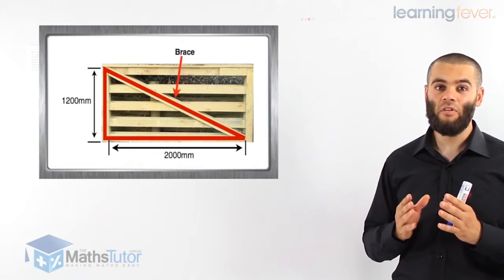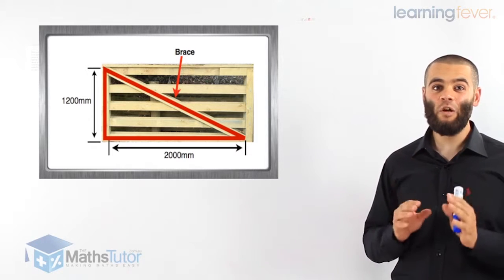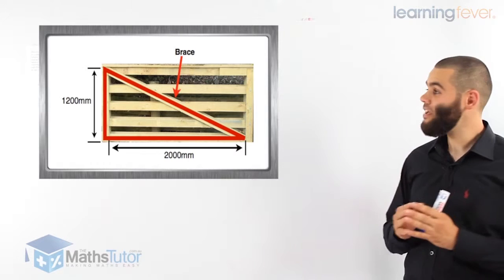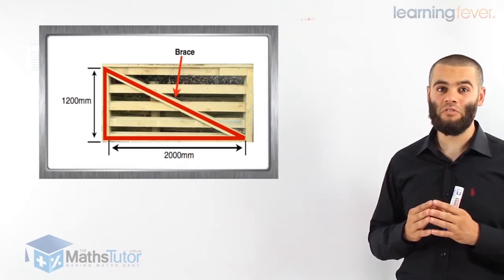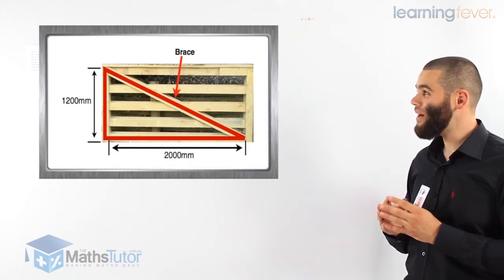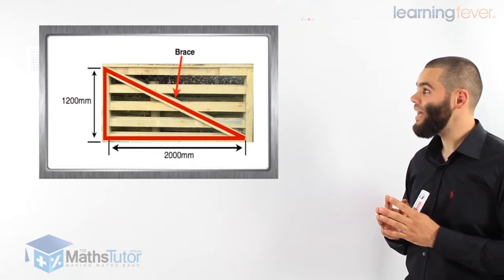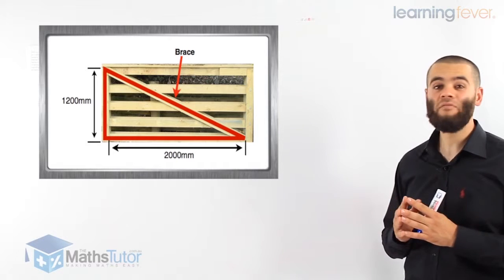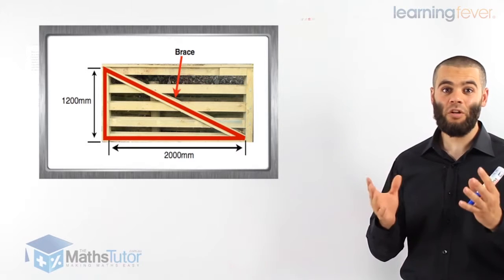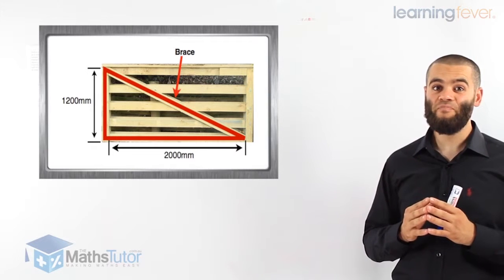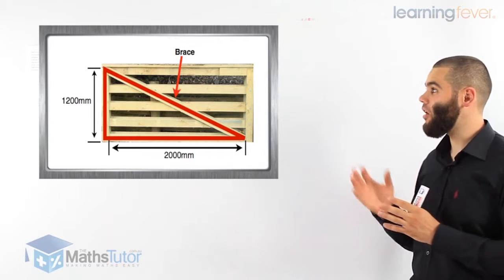Find the length of the brace. Look carefully and closely at the diagram. The brace is actually the hypotenuse — it's the hypotenuse of a right-angled triangle. One short side is 2,000 millimeters and the other short side is 1,200 millimeters. As you can see highlighted, we have a right-angled triangle. The hypotenuse is the brace we're going to create, and we're going to use Pythagoras' theorem to find its length.